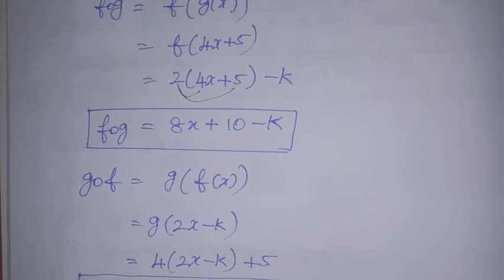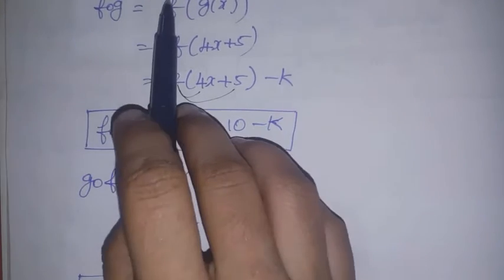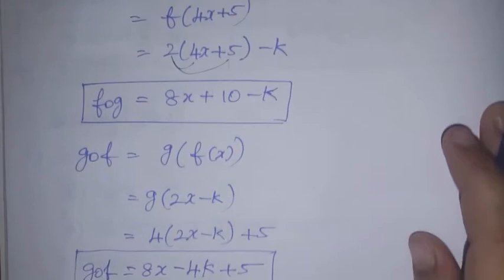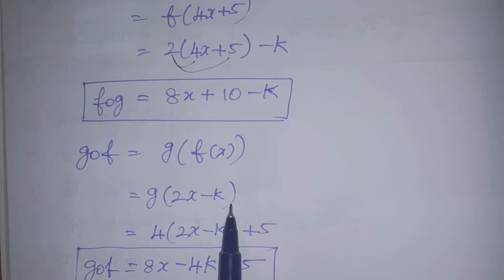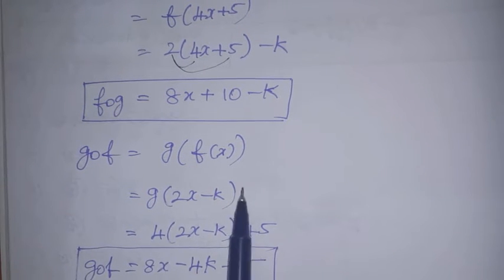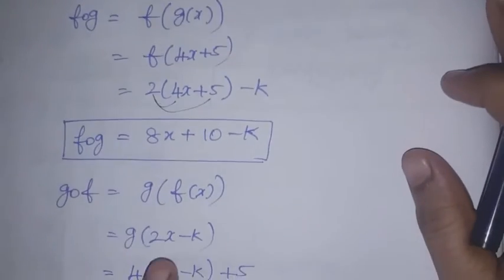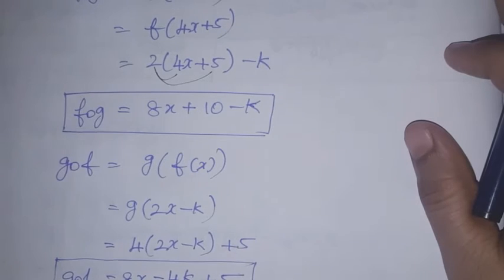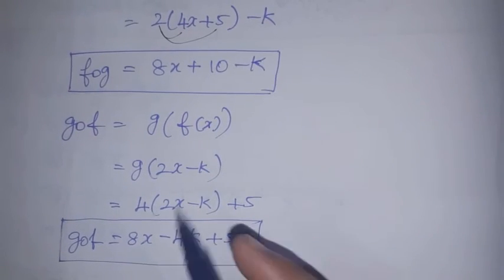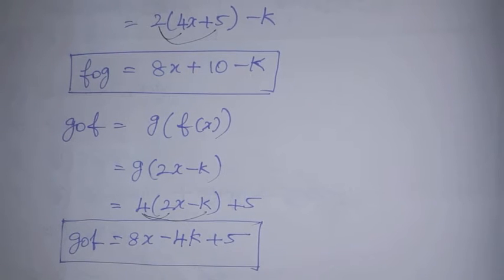Now g∘f equals g of f(x) = g(2x - k). Since g(x) = 6x - k, we replace x with (2x - k): 4 × (2x - k) + 5. So g∘f = 8x - 4k + 5.